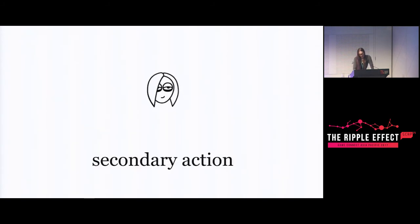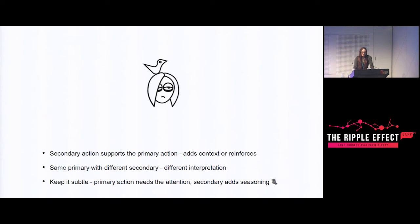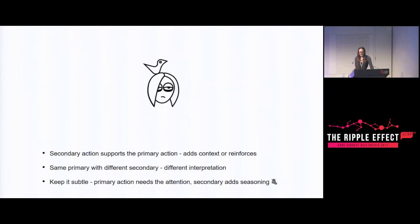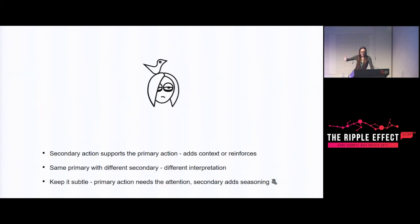Secondary action: when you have a primary motion you're going for - here we have a bird pecking - having a secondary action that's not part of it but responding to it can really reinforce and emphasize the context. A great example is facial expressions or gestures. Even just adding blinking in response to the pecking helps imply more force, gives it more liveliness, makes it a little funnier. It might not necessarily be literally moving anything - it can be switching out some frames - but allowing a couple other things to go with the main animation is important to keep in mind.